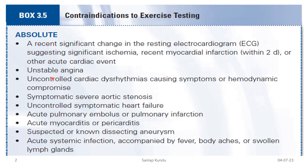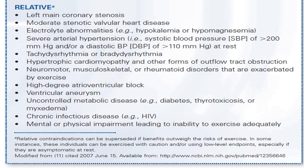The absolute contraindications to exercise testing include unstable angina, symptomatic severe aortic stenosis, and uncontrolled symptomatic heart failure — those are options A, B, and C. So we are left with option D as the relative contraindication.